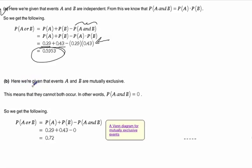Now in part B, we're given that the events are mutually exclusive. That means that they can't both occur. If A happens, B can't. If B happens, A can't. So in other words, the probability of A and B goes to 0. So that makes it super easy because we use the same formula.